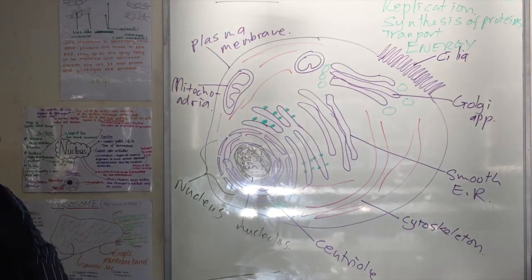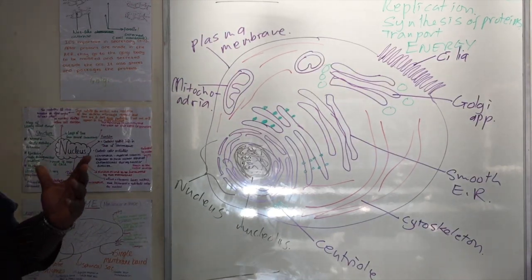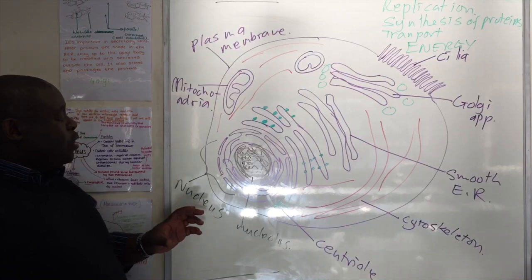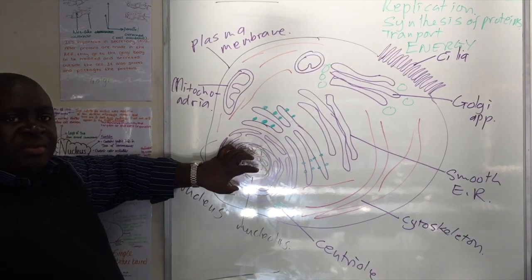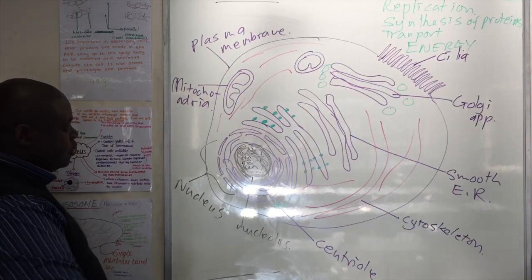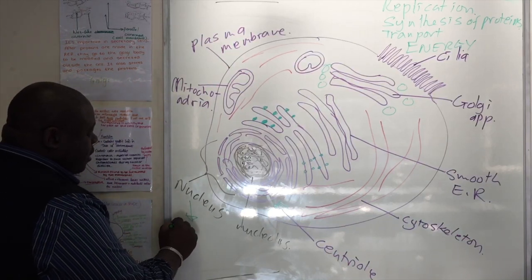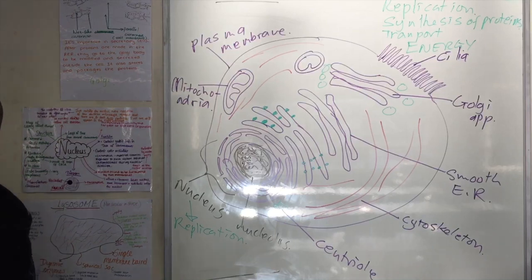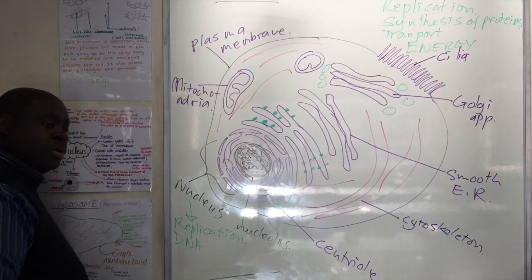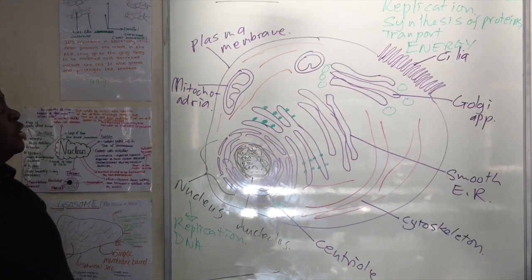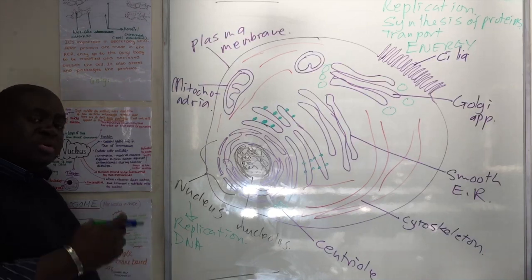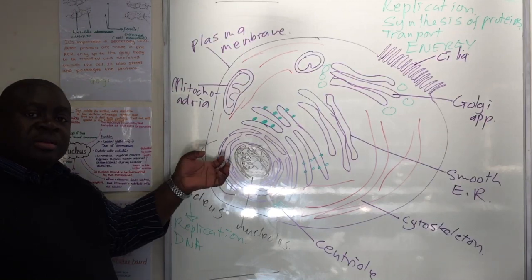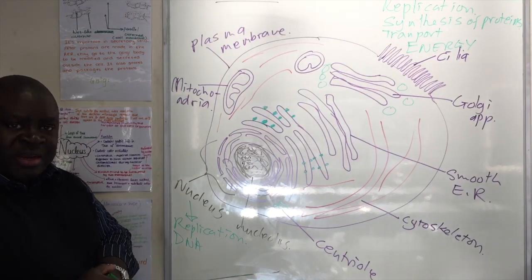Let's take the first one: replication. How can the cell replicate — how can it copy itself? It copies itself because of the genetic material in the nucleus. The nucleus's purpose is for replication, because of the DNA, which provides information that enables the cell to divide by mitosis, so the total number of chromosomes will be doubled whilst the cell divides to form two diploid cells.